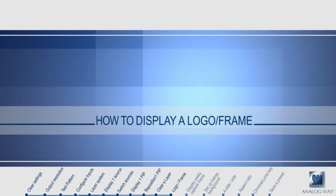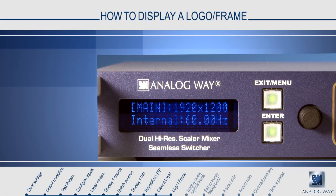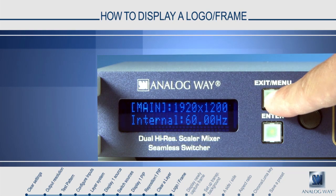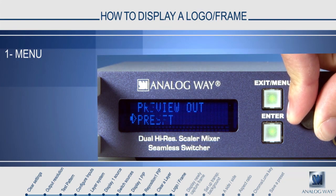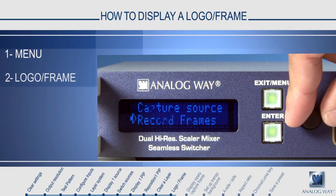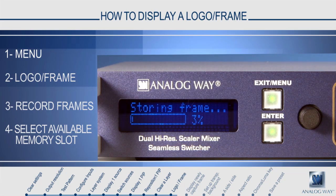How to display a logo or a frame. In Analog Way's vocabulary, a frame is a full screen capture, and a logo is a small, partial screen capture. To capture a logo or a frame, press menu and scroll down to logo and frame in the menu. Select record frame, choose an empty slot, and press enter. The device will now capture the contents of your main program screen to the frame slot.